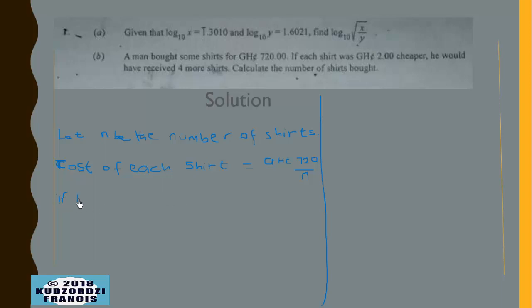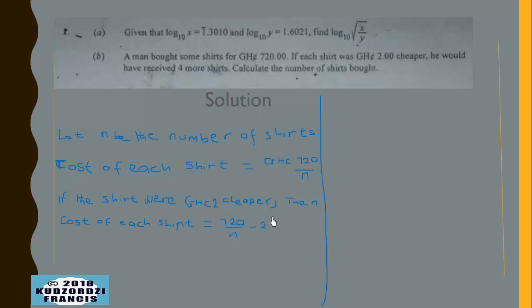We are told that if the shirts were 2 cedis cheaper, then the cost of each shirt would be 720 over n minus 2 cedis. If we simplify this further, we get 720 minus 2n all over n.